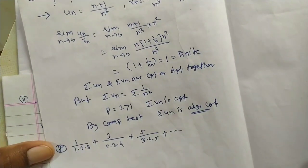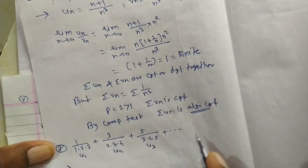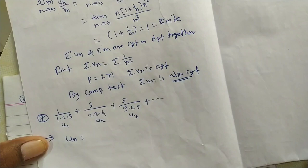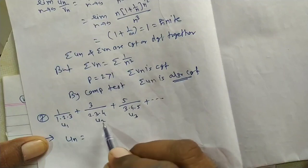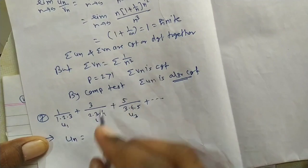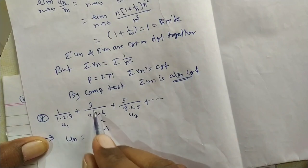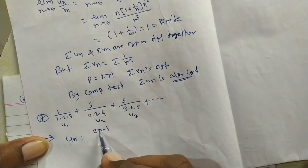Finding the nth term: observe the numerators carefully — u1 has 1, u2 has 3, u3 has 5. These are odd numbers: 1, 3, 5. The nth odd number starting from 1 is 2n−1. Check: n=1 gives 1, n=2 gives 3, n=3 gives 5. So the numerator is 2n−1.